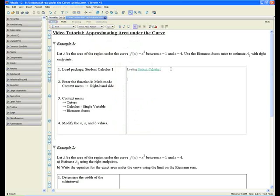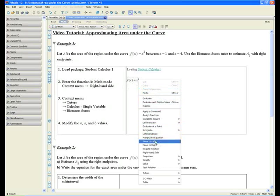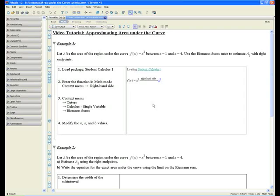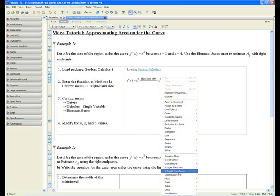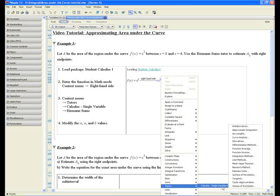Go to the next line. Enter the function in math mode. Click on math mode and begin entering in the function. Go to context menu and right hand side to obtain the right hand side of the equation. Step 3: Go to context menu, tutors, calculus single variable and Riemann sums.